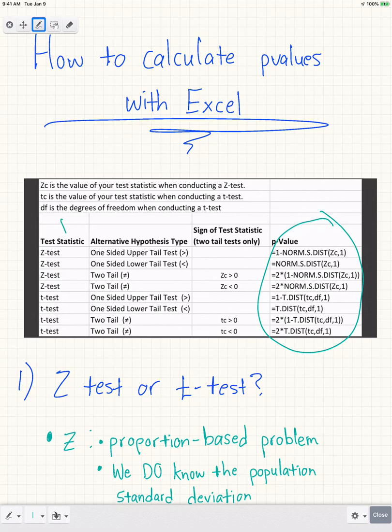We start with the test statistic to see which one we have, either Z or T. Then we look at our alternative hypothesis type: whether it's a one-sided upper tail, one-sided lower tail, or two-tail test. Then we look at the sign of our test statistic, which is only relevant for two-tail tests. Finally, the fourth step is using the appropriate Excel function to plug in and solve for your p-value.